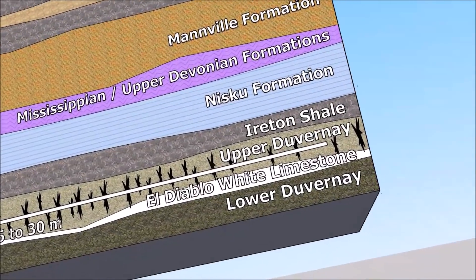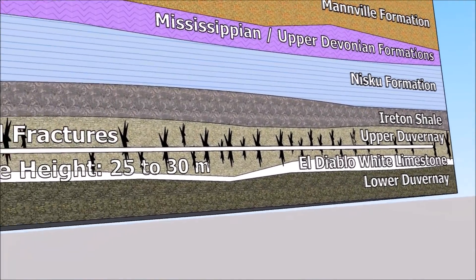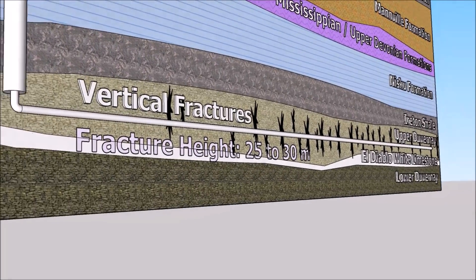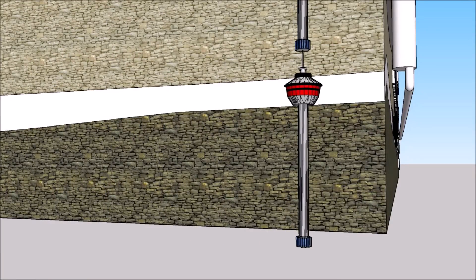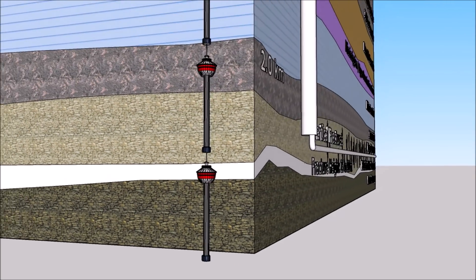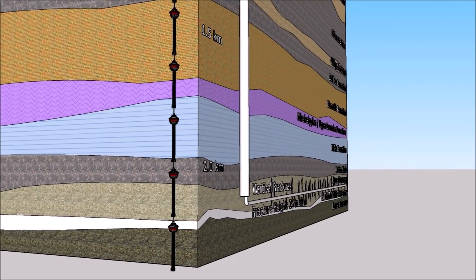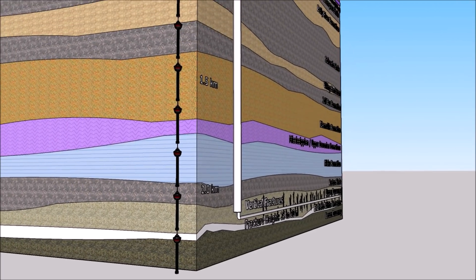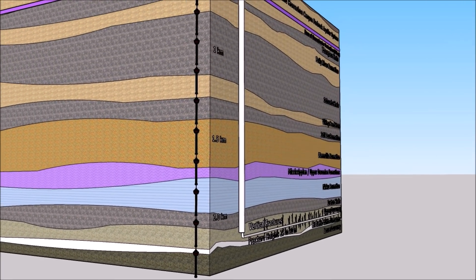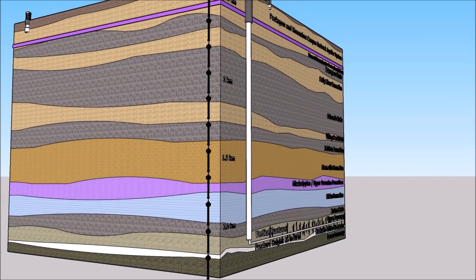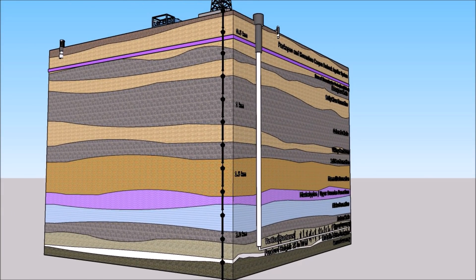In downtown Calgary, the Calgary Tower is approximately 190 meters tall. As we can see, the vertical separation distance between a domestic use aquifer is over 12 vertically stacked Calgary towers, or over a 2 kilometer geologic separation distance.